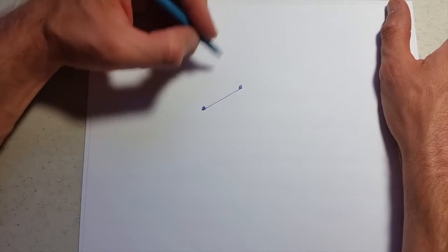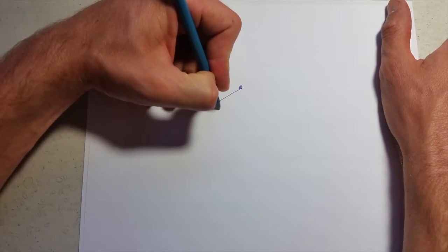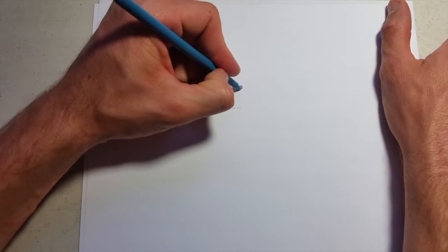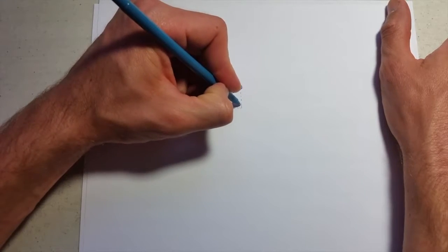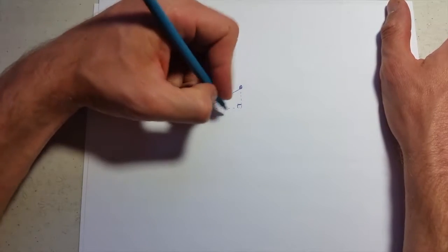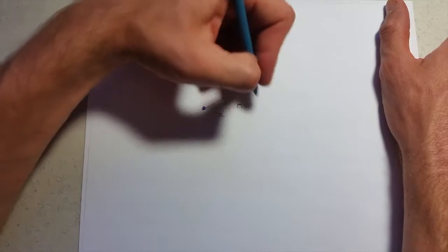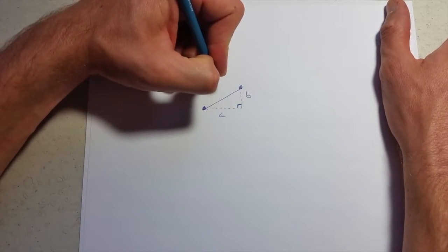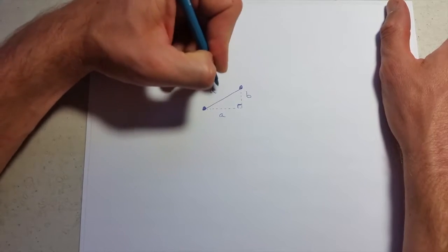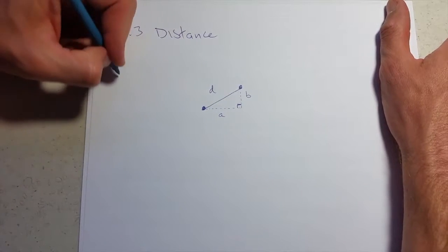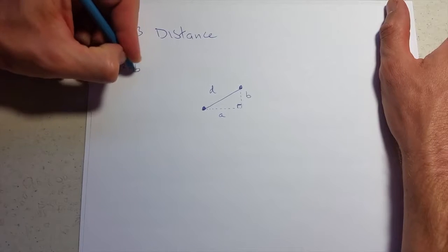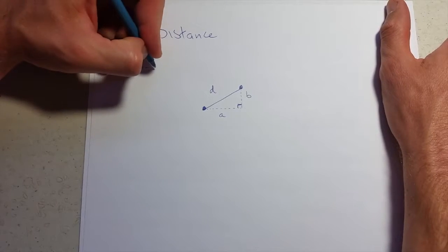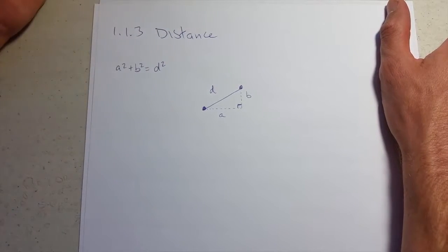So how do we calculate the length of this line? What we're going to do is figure out an x and a y component, so if I knew a and b, how would I get the distance d? Well, this is Pythagorean Theorem. a squared plus b squared equals c squared, or in this case I'm just going to use d squared.